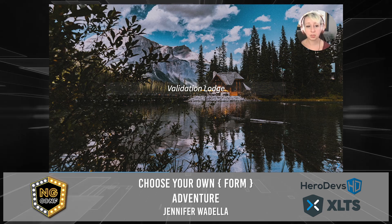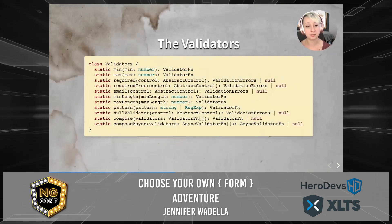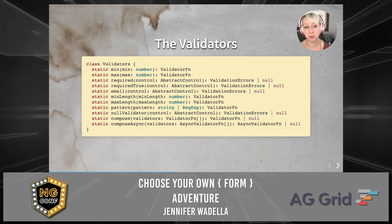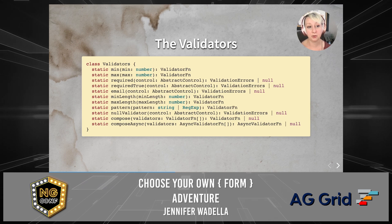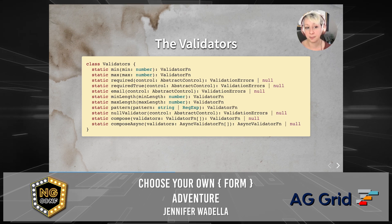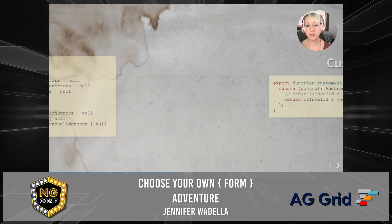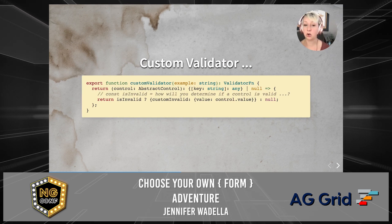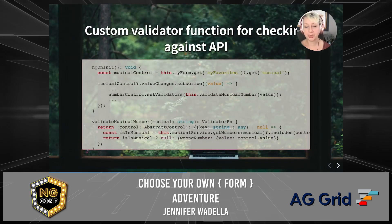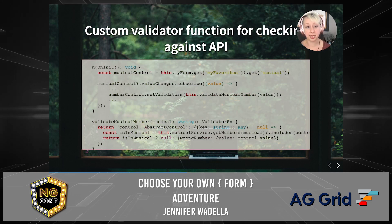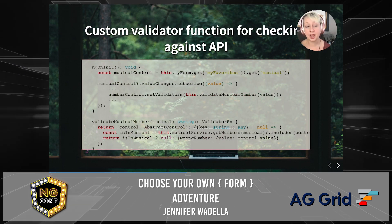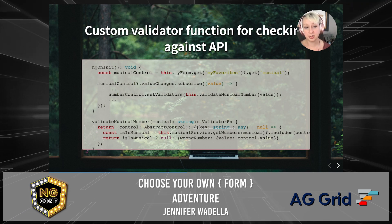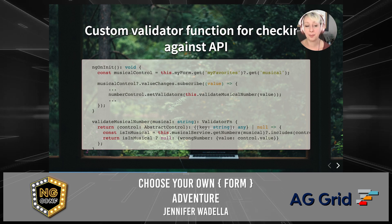The princess sighed and gazed across the lake. She saw a small cabin with a sign: 'Validation Lodge.' She jumped in the boat and rode towards it. Upon entering, she found an old book labeled 'Validators.' As she flipped through it, she realized all of these validators were available throughout Angular — she could determine if a form control should be required, set a min or max value, or pass a regex into the pattern validator. As she continued, she found a blank page labeled 'Custom Validator' with an example implementation. She realized she could create her own validator to check against the sorcerer's API.